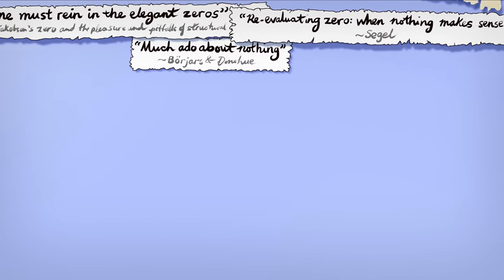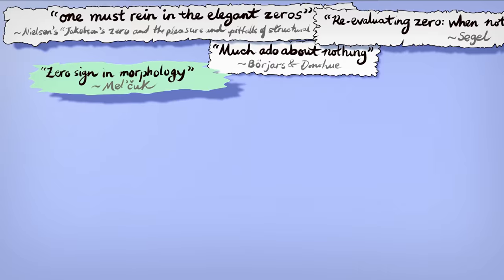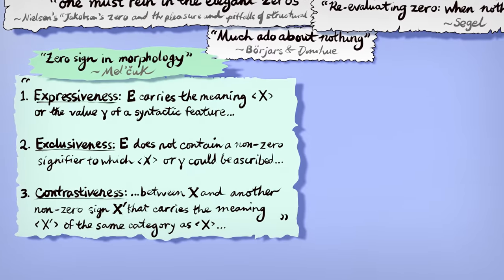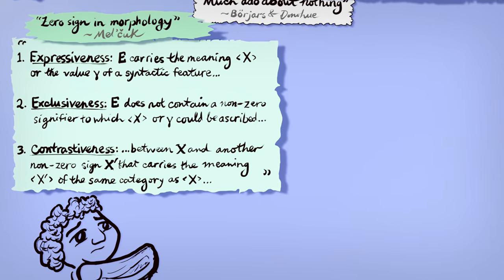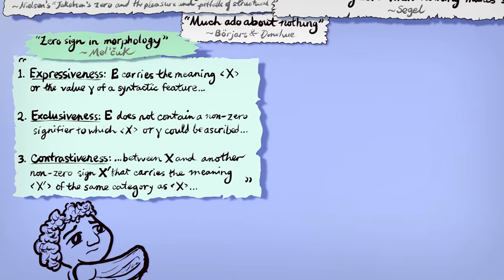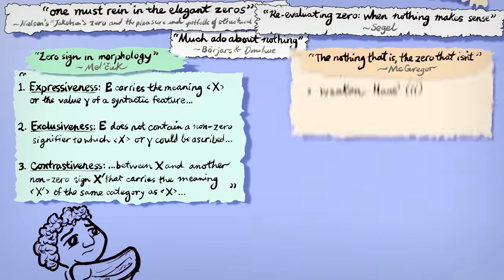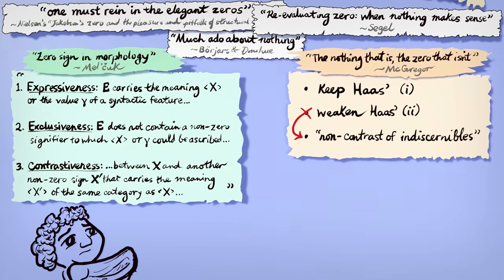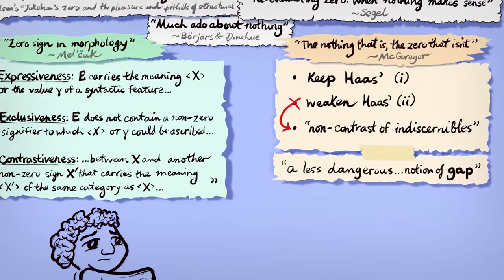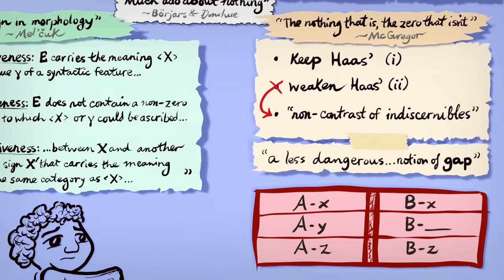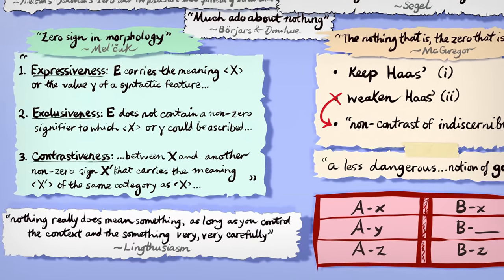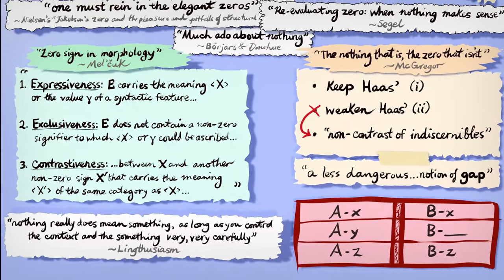Some dispirited, some undeterred — many zero-believers urge temperance to rescue Null from critiques that condemn it to the role of odd variant at best. In paper after paper, they teach exacting techniques to sense the presence of an absence of a non-zero sign. Their revised conditions are logical if esoteric: zeros become meanings without signs that contrast with other meanings with signs — content without form but never without content. Or they are gaps in paradigms where rows and columns intersect, but not substances that linger when their systems vanish. Nothing really is something if we control the context and the something very, very carefully.